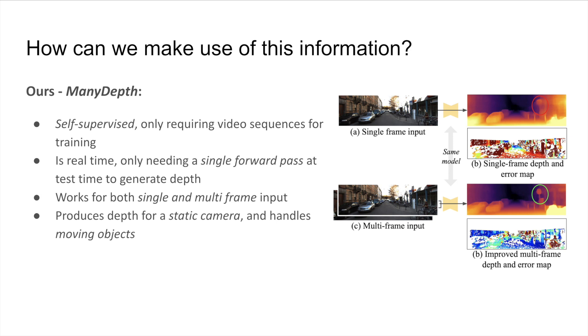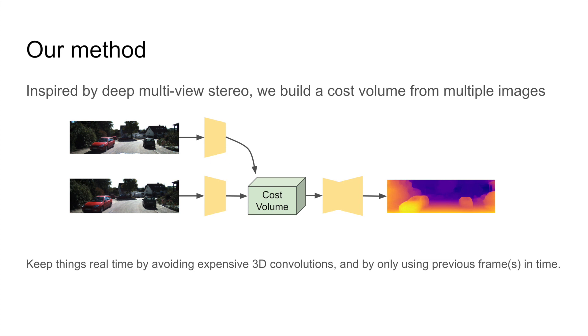So, how do we do it? Inspired by multi-view stereo, we build a cost volume from multiple images, keeping things real-time by avoiding expensive 3D convolutions. However, when combining a cost volume with self-supervised training from video, we encounter three key problems.